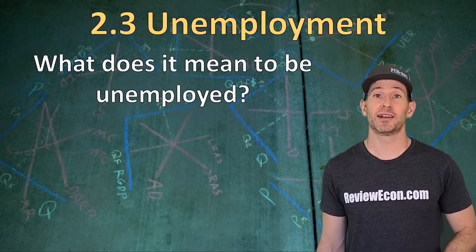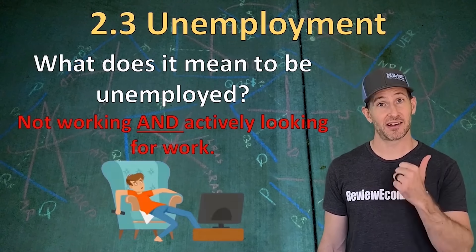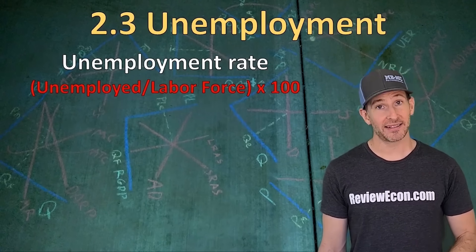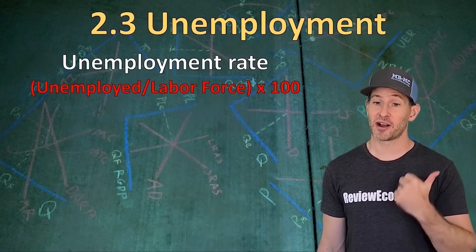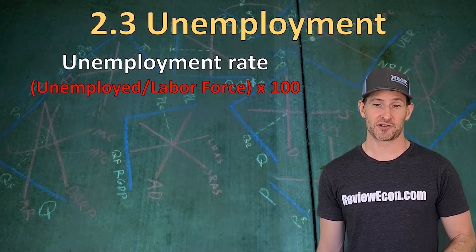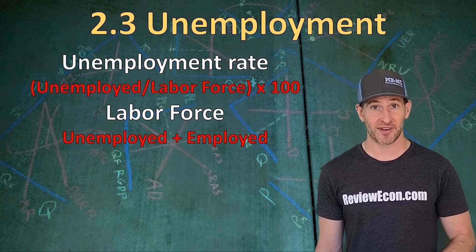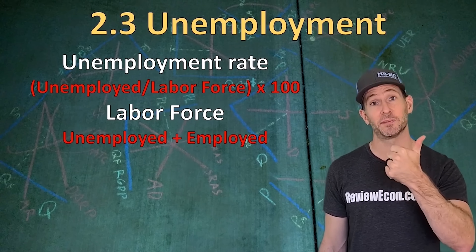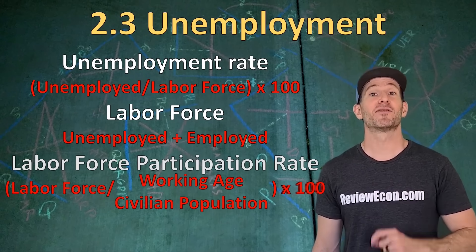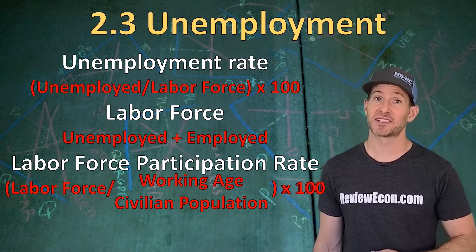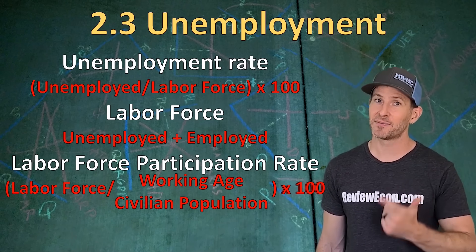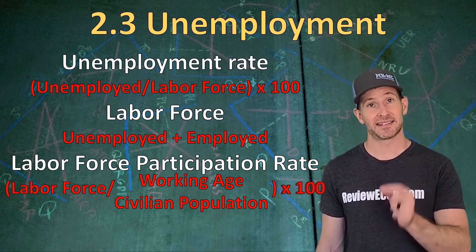The next thing we're going to look at is unemployment. To be unemployed, you must be not working and actively looking for work. The unemployment rate is the number of unemployed people divided by the labor force, times 100. The labor force is unemployed people looking for work plus employed people. The labor force participation rate is the percentage of citizens that are part of the labor force — take the labor force, divide by the civilian population, and multiply by 100.